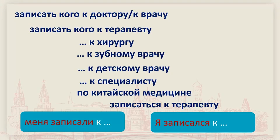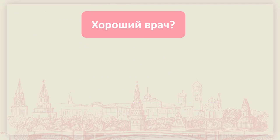我们把这两个句型复习一下：НИНА записывают к кому，НИНА是第四格。如果是病人自己说，要被挂号就要说：Я записываюсь к кому，反身动词。注意二者的区别。下面，挂号的时候，经常有病人问大夫：这个医生有经验吗？这个医生好吗？